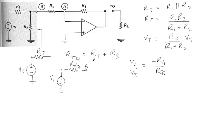Since Req equals RT plus R3, and RT has been determined earlier, hence V0 divided by VT will simply be equals to minus R4 divided by RT plus R3.